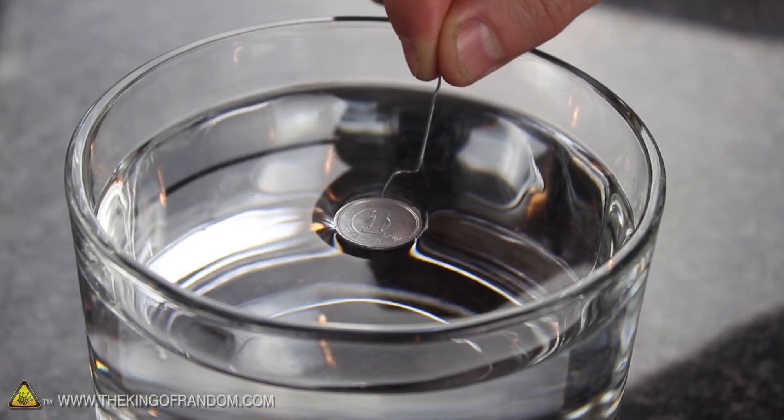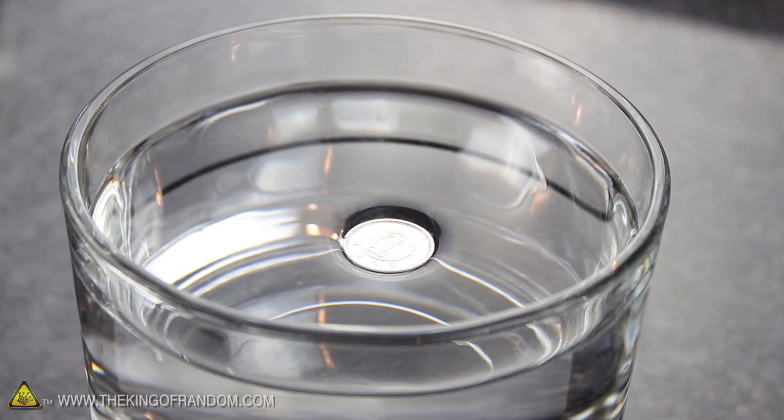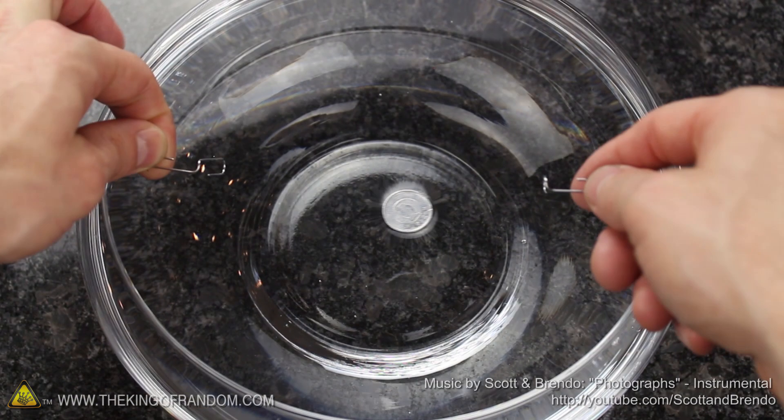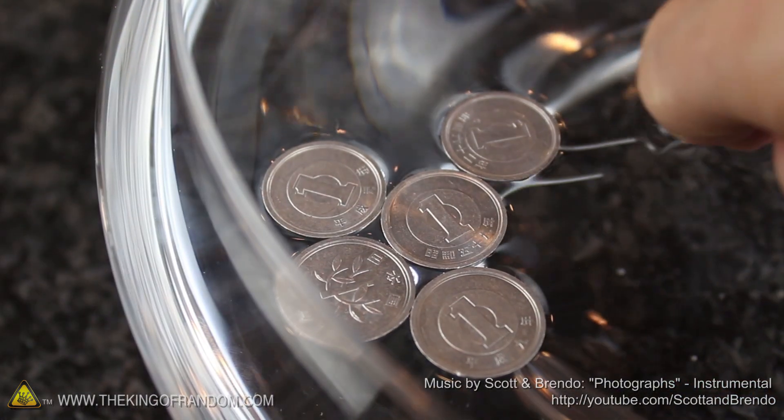Well now you know a cool little trick you can try at home, at school, or the office to impress your friends and co-workers by making random bits of metal float on water. That's it for now. If you like this experiment, perhaps you'll like some of my others. Check them out at thekingofrandom.com